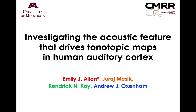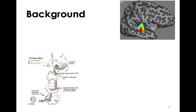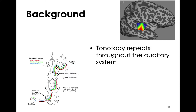Today I'll be discussing our investigations into the acoustic feature that drives tonotopy. It's well established that tonotopy exists throughout the human auditory system, beginning in the cochlea where sounds are organized spatially in a high to low mapping of frequency content as you go from the base to the apex. This spatial organization of frequency repeats throughout the auditory pathway, but processing further up in the hierarchy involves the extraction of more complex sound features like speech and music.